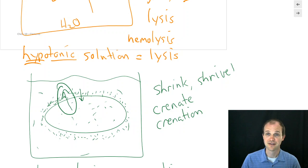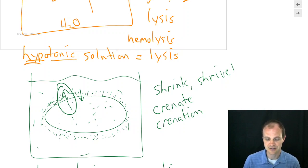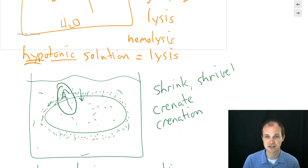Those are our topics for chapter nine: colligative properties, isotonic, hypotonic, and hypertonic solutions, and also definitions of colloids, suspensions, and solute solutions. Thanks so much.